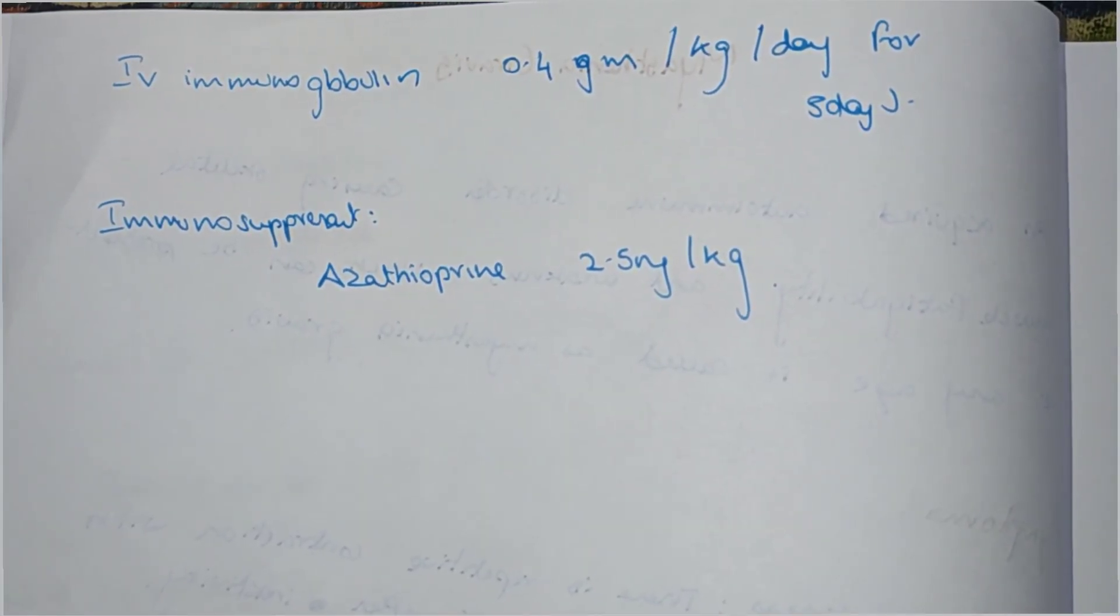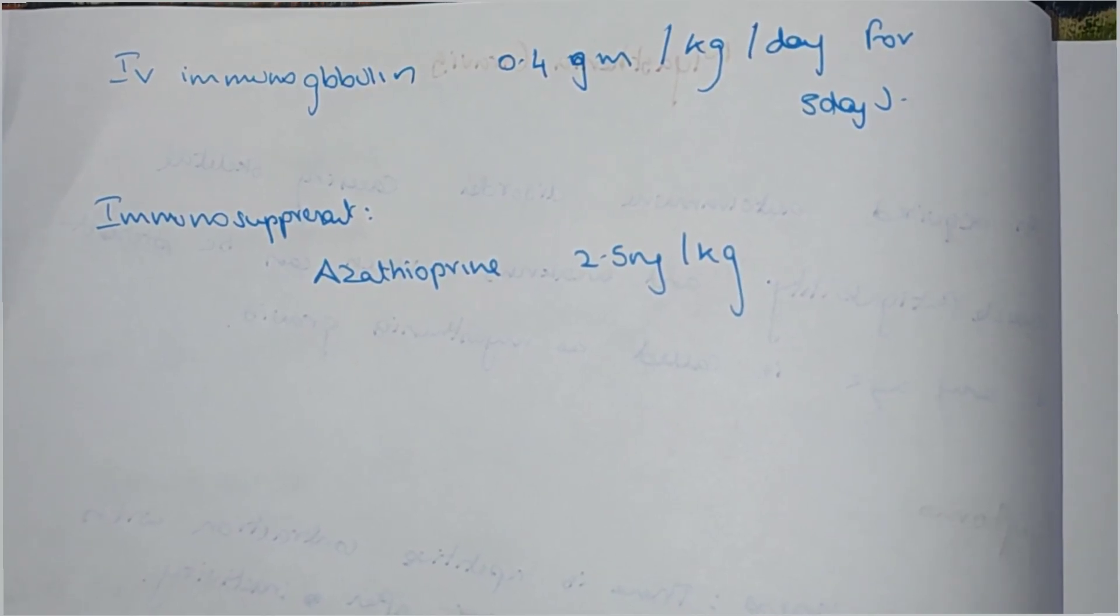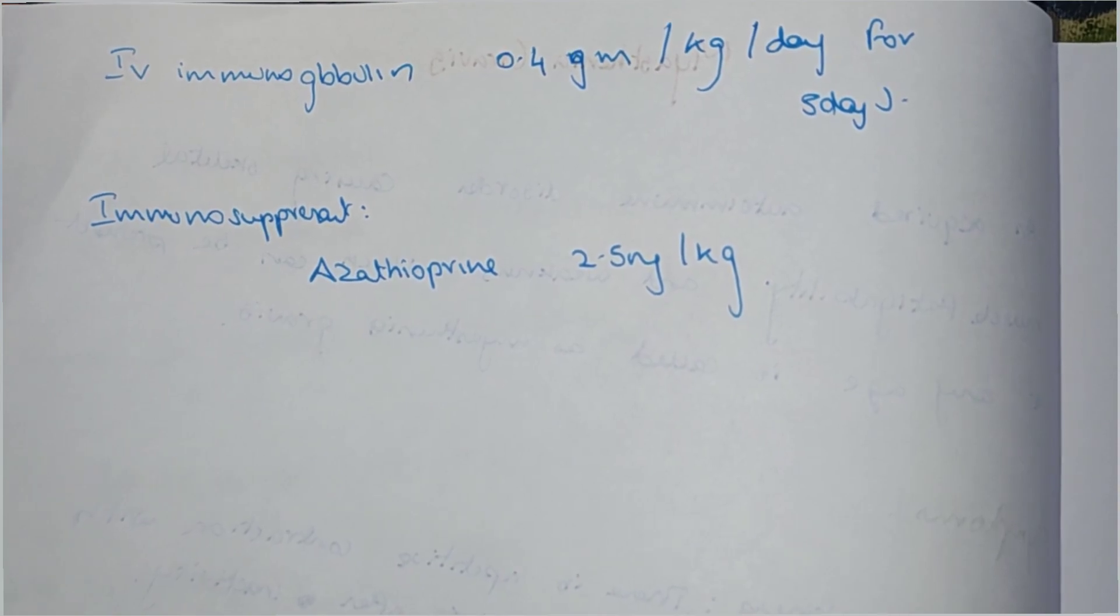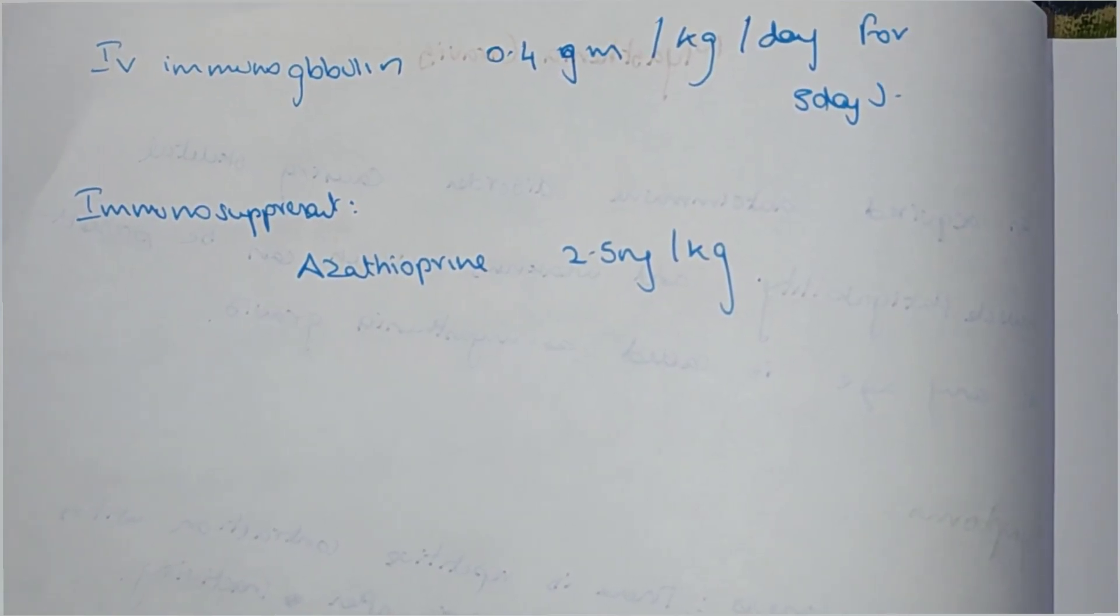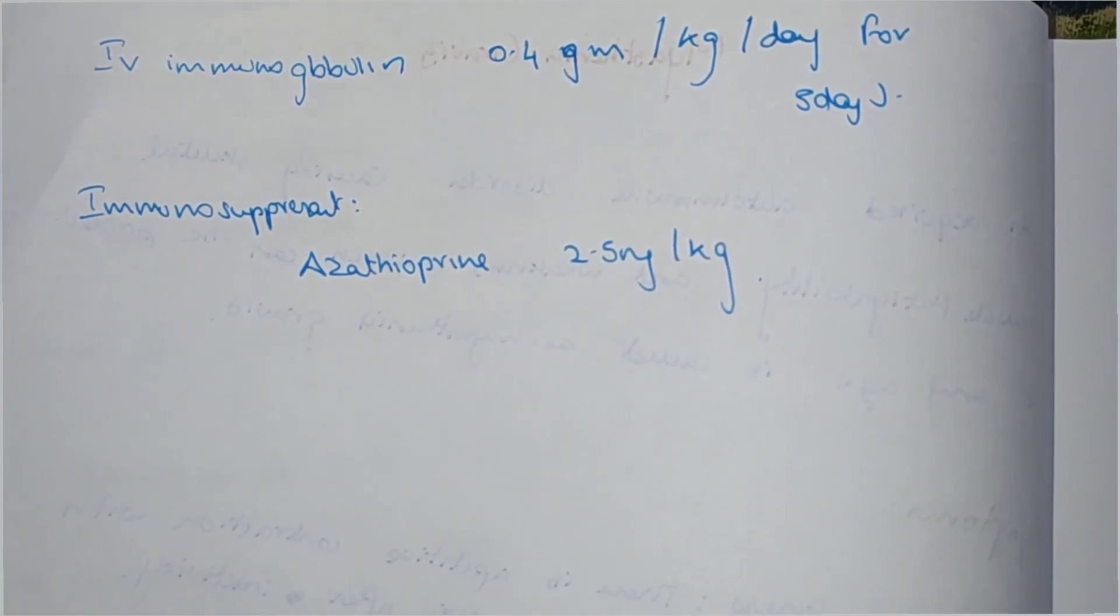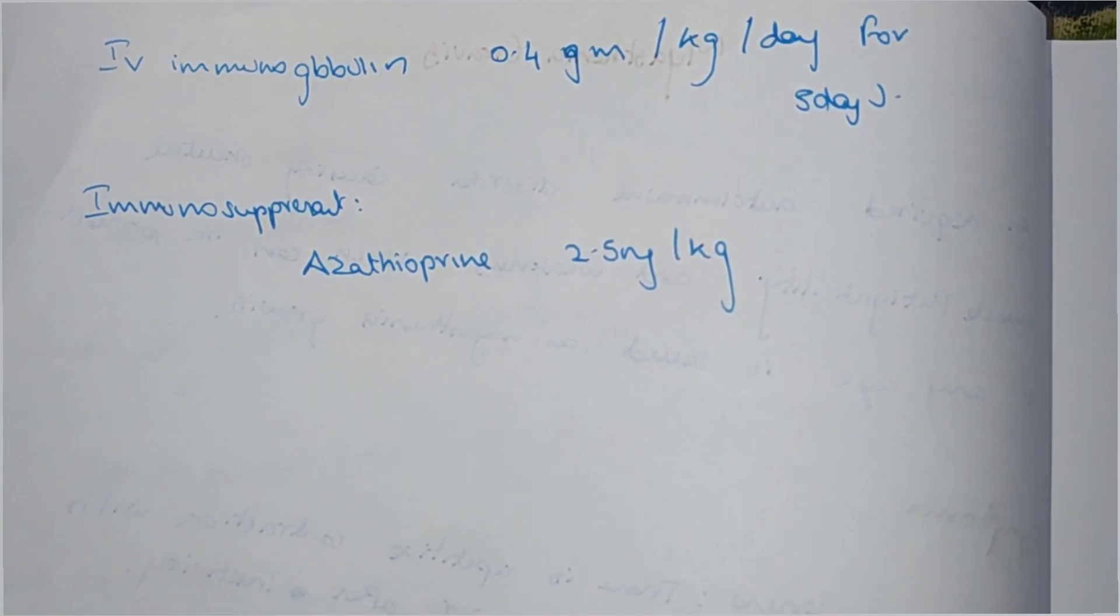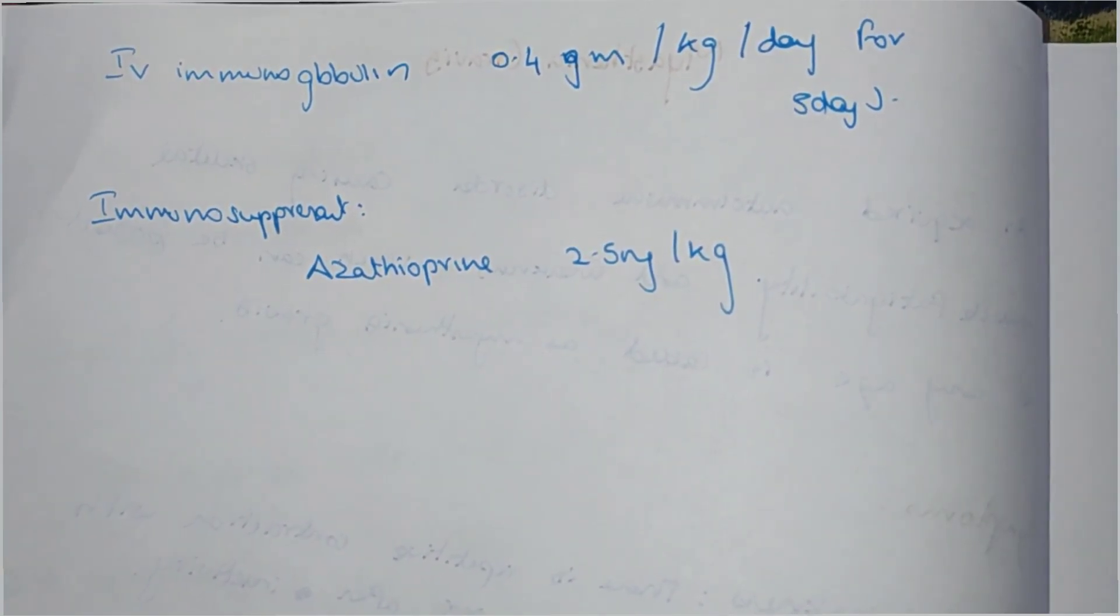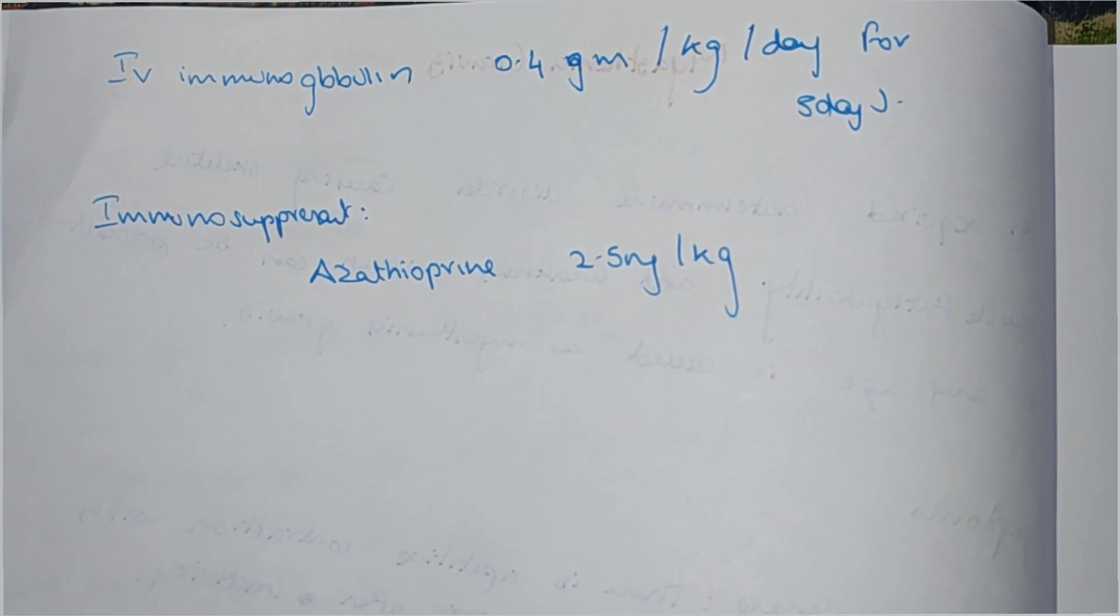IV immunoglobulin 0.4 grams per kg per day for 5 days. Immunosuppressant: Azathioprine 2.5 mg per kg.